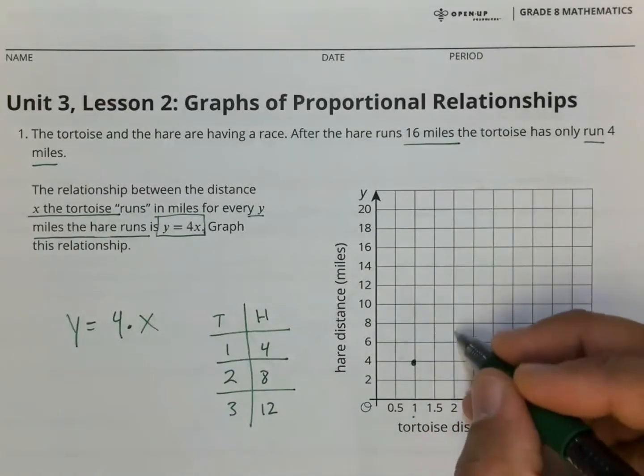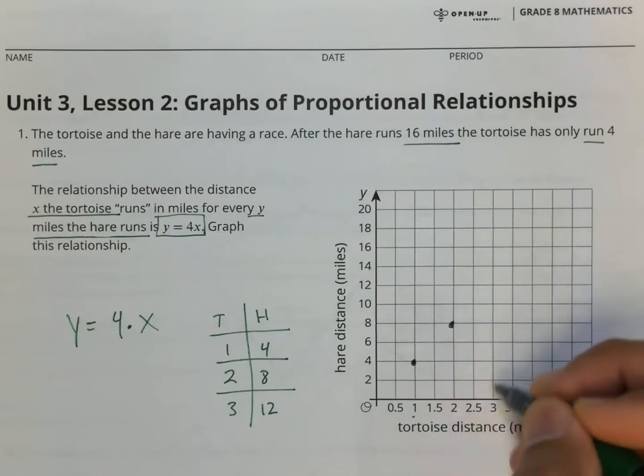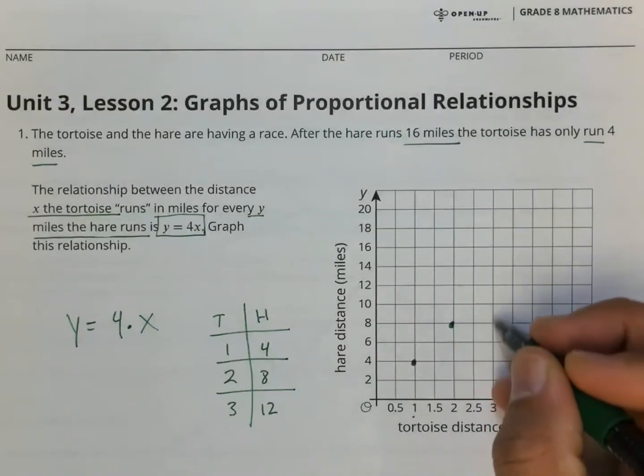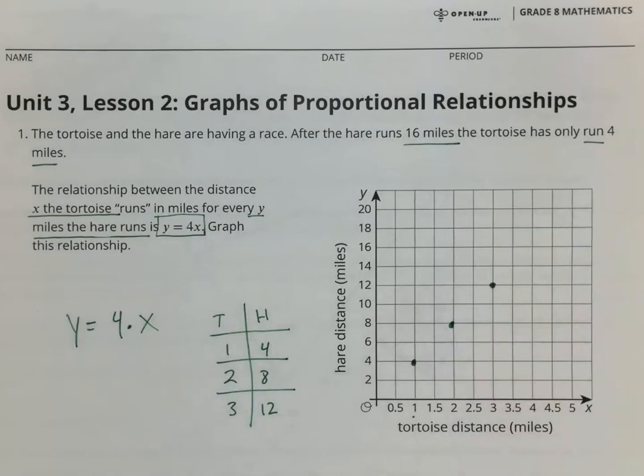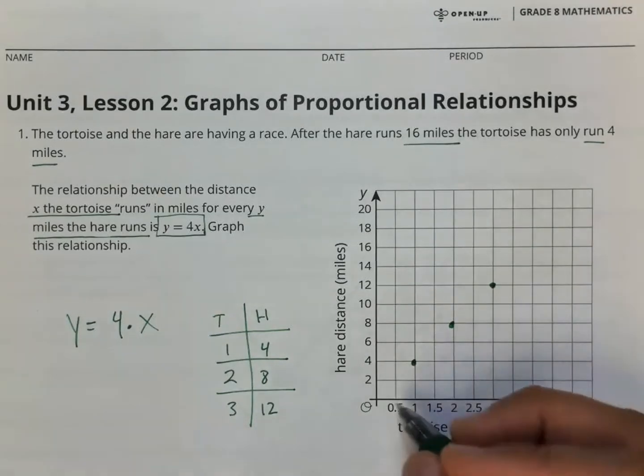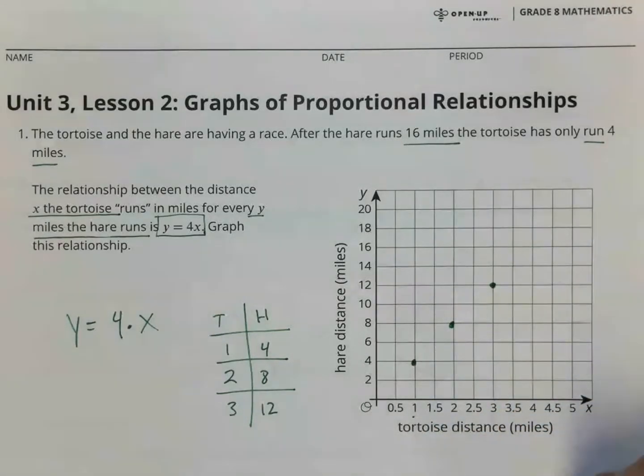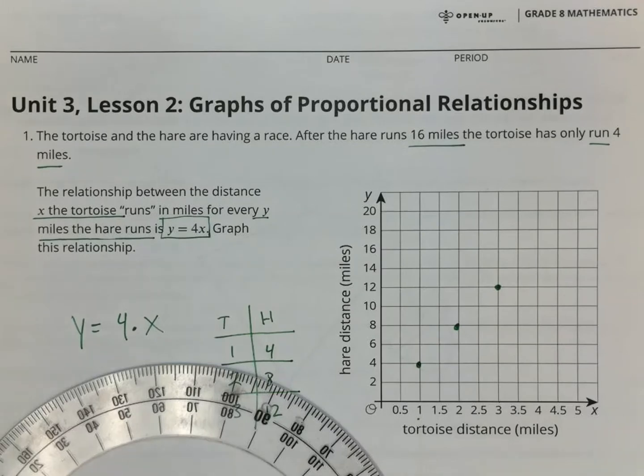Two for the tortoise and eight for the hare. Three, 12. And then notice how all my points line up. So that's how I know that I have my graph done correctly.